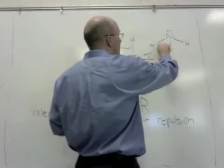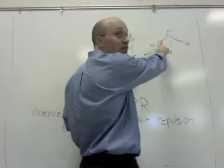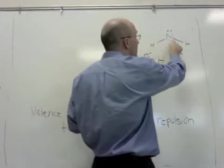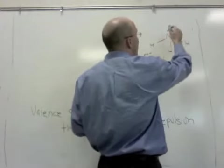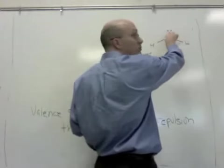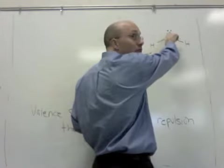Just like these bonds here, there's a pair of electrons in that bond. There's a pair here, there's a pair here, and then this is another type of electron pair here.